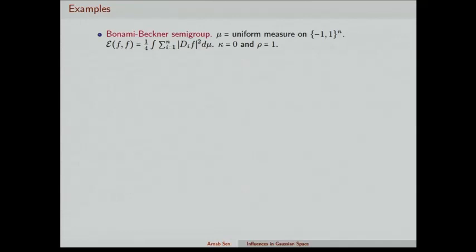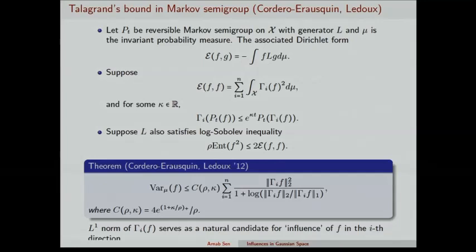In an abstract Markov semigroup the i-th direction is not clear, but it becomes clear in the examples. Let me give three examples. First is the Bonami-Beckner semigroup, where Γ_i is just the discrete derivative and the log-Sobolev constant is 1. Specializing the general theorem by Ledoux and Cordero-Erausquin gives exactly the Talagrand variance bound for functions defined on the discrete space.